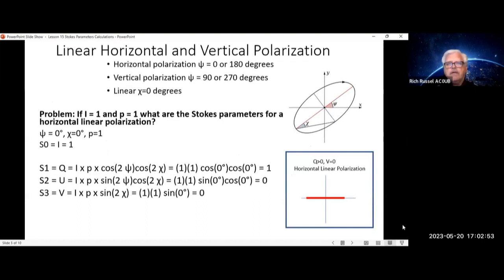Let's look at linear and horizontal and vertical polarization. To get horizontal polarization, psi equals 0 or 180 degrees. Vertical polarization, psi equals 90 or 270 degrees. And linear, chi equals 0 degrees.